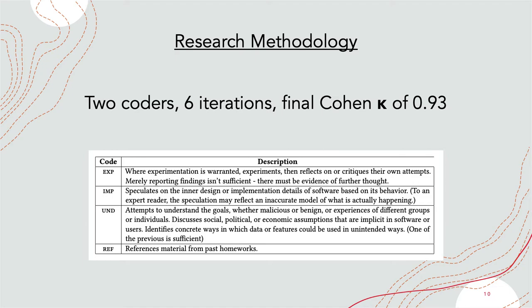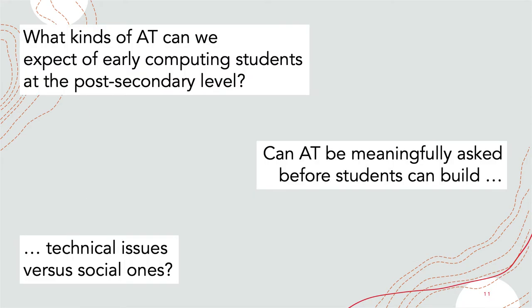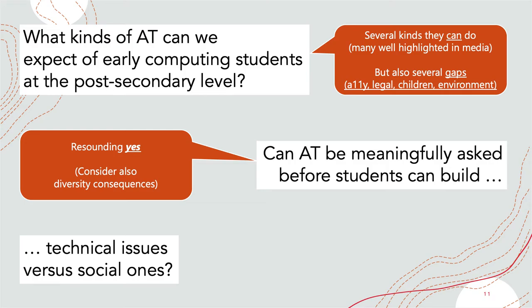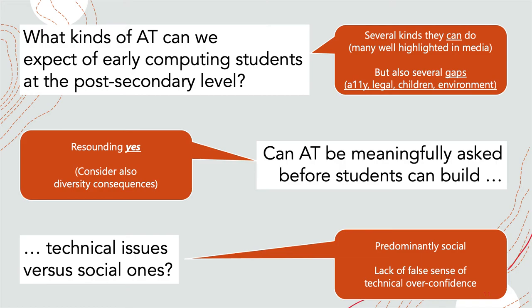Back to the research: we did several iterations over portions of the student responses to construct a rubric with high intercoder reliability, then used these to analyze all the student responses. At a high level, here's what we found: students can do several kinds of adversarial thinking, though we also saw some gaps in things they didn't discuss. Students can talk meaningfully about systems well beyond their technical sophistication. Finally, students primarily focus on social issues — in a way, this is good because there isn't a lot of technological overconfidence.